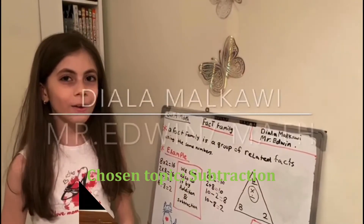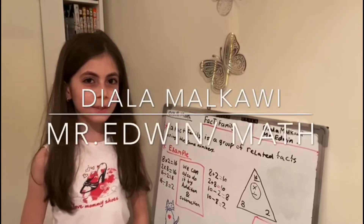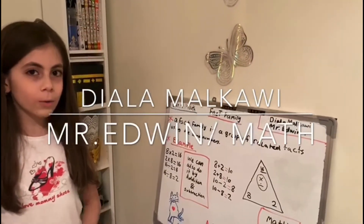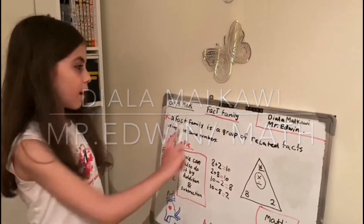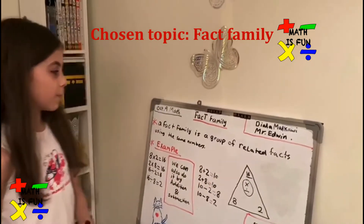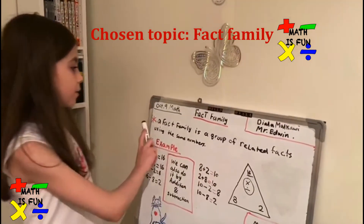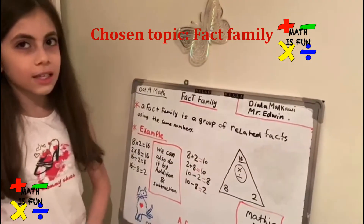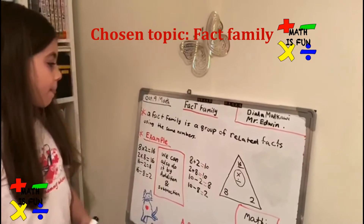Hello, everybody. I'm Diana. Today we're going to talk about a fact family. What is a fact family? A fact family is a group of related facts using the same numbers.